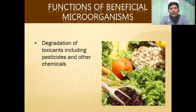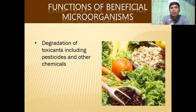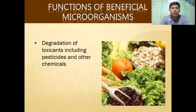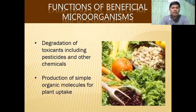Microorganisms can also help degrade toxicants, including pesticides and other chemicals. For people gathering vegetables and fruits from the market and feeding them to their pigs, one way to degrade these toxicants is through the use of EM, or effective microorganisms. They also aid in the production of simple organic molecules for plant uptake.